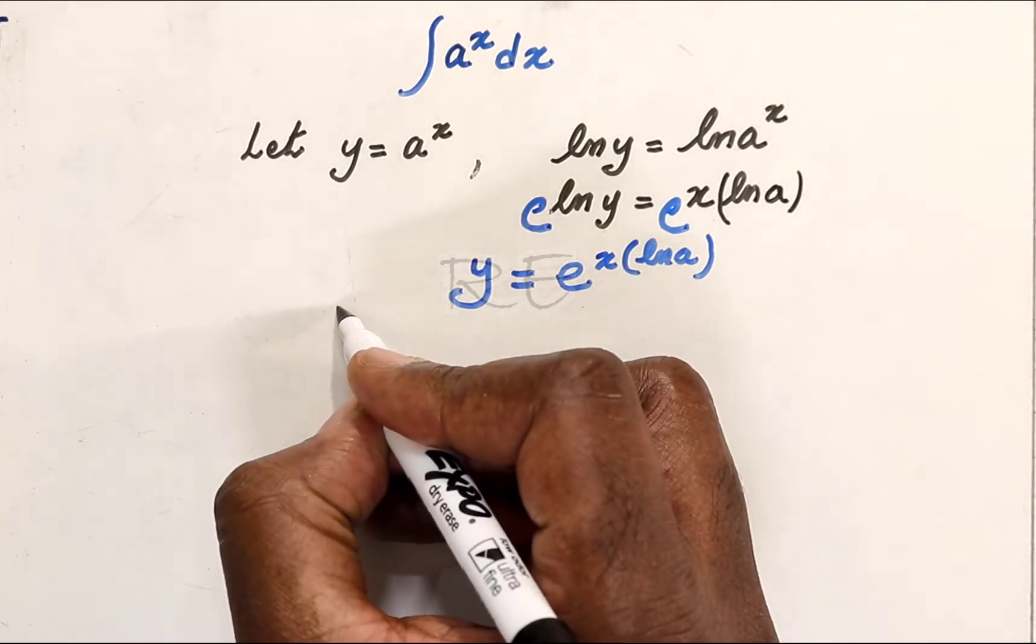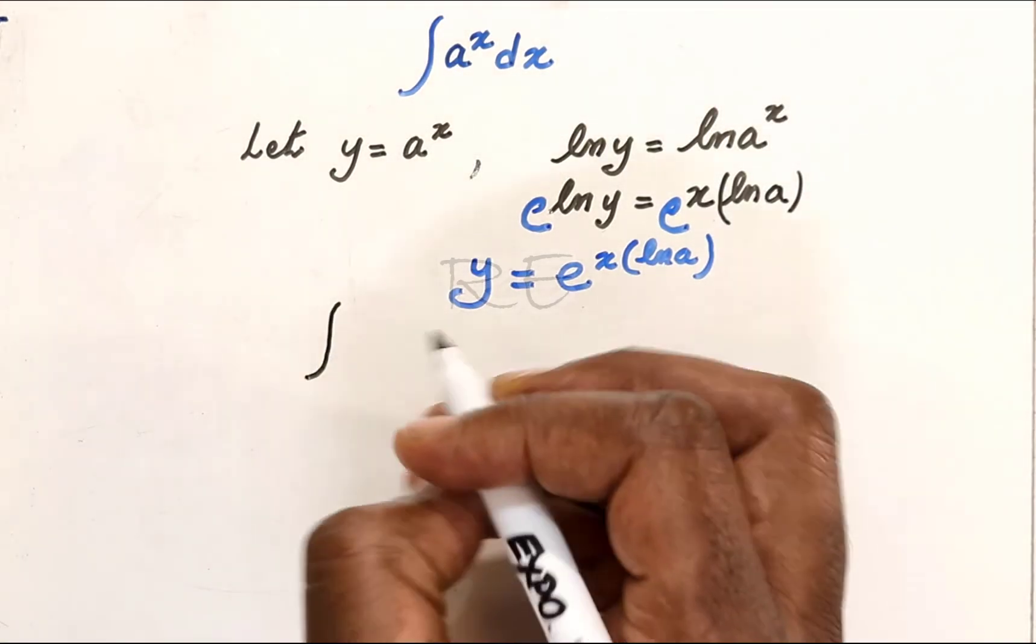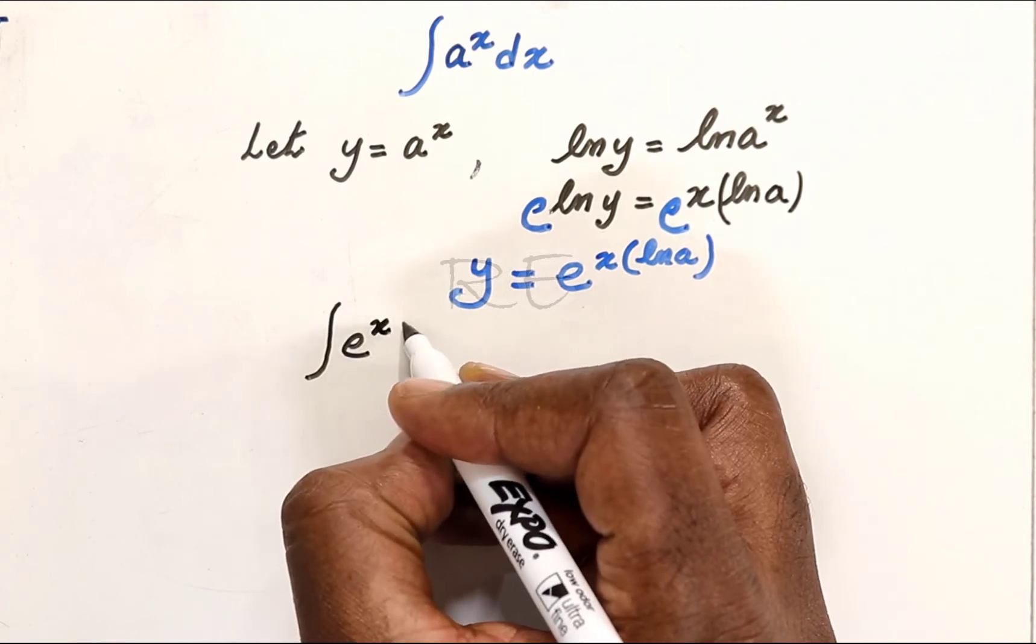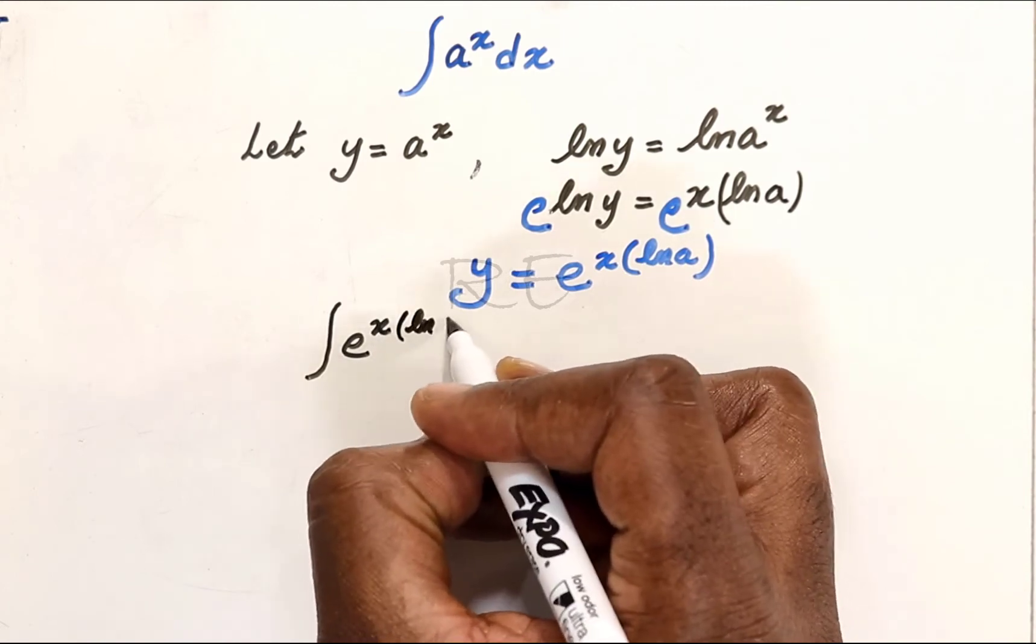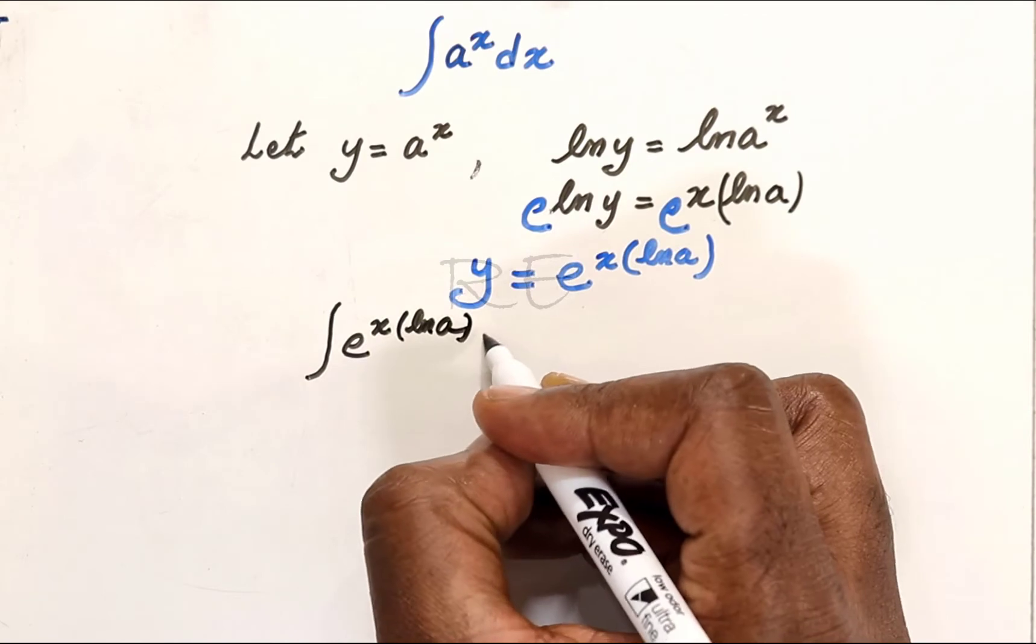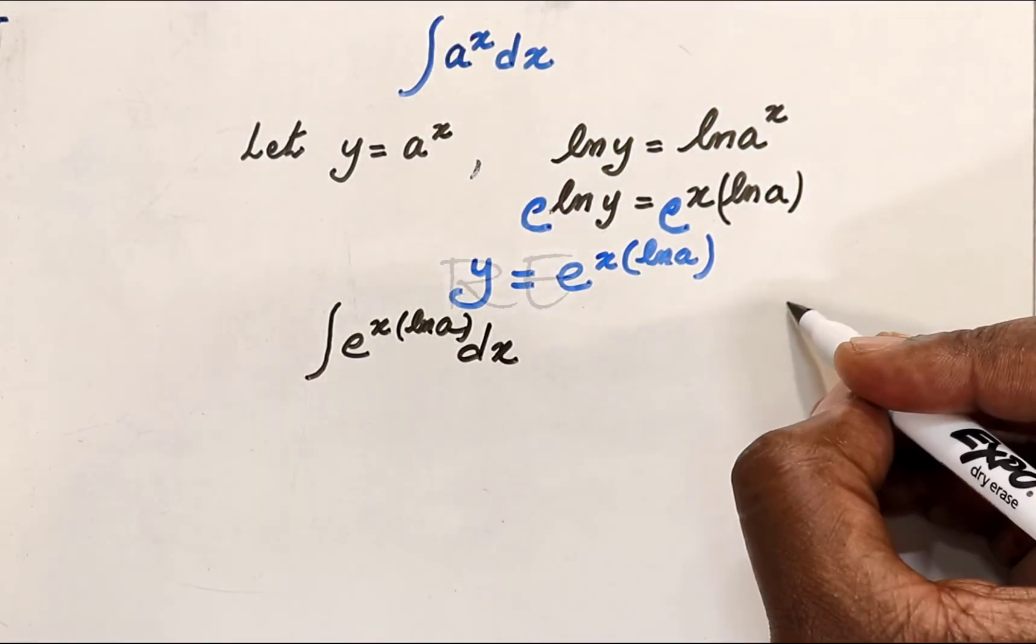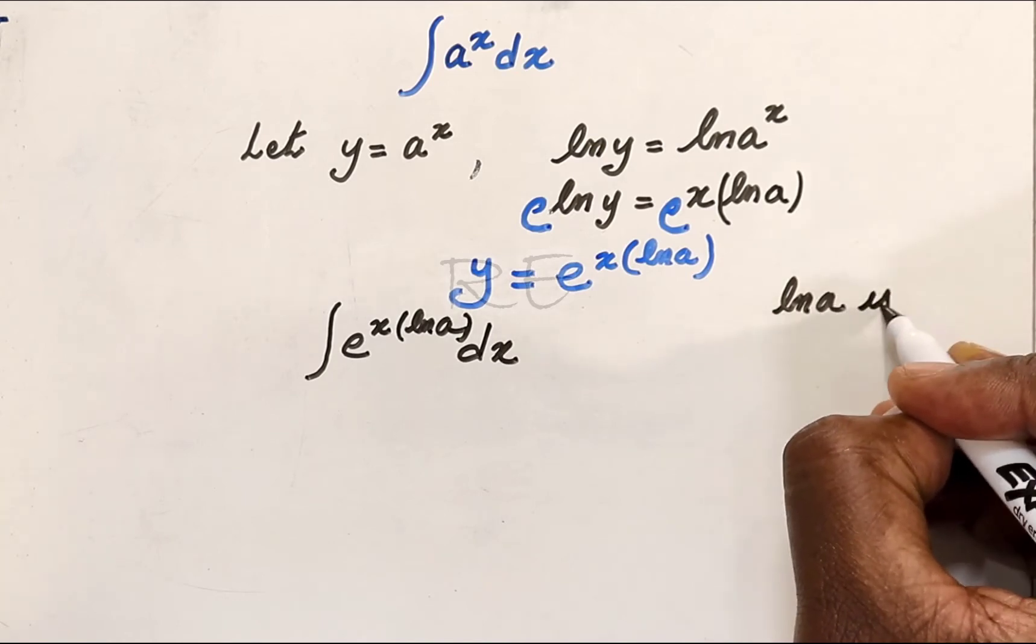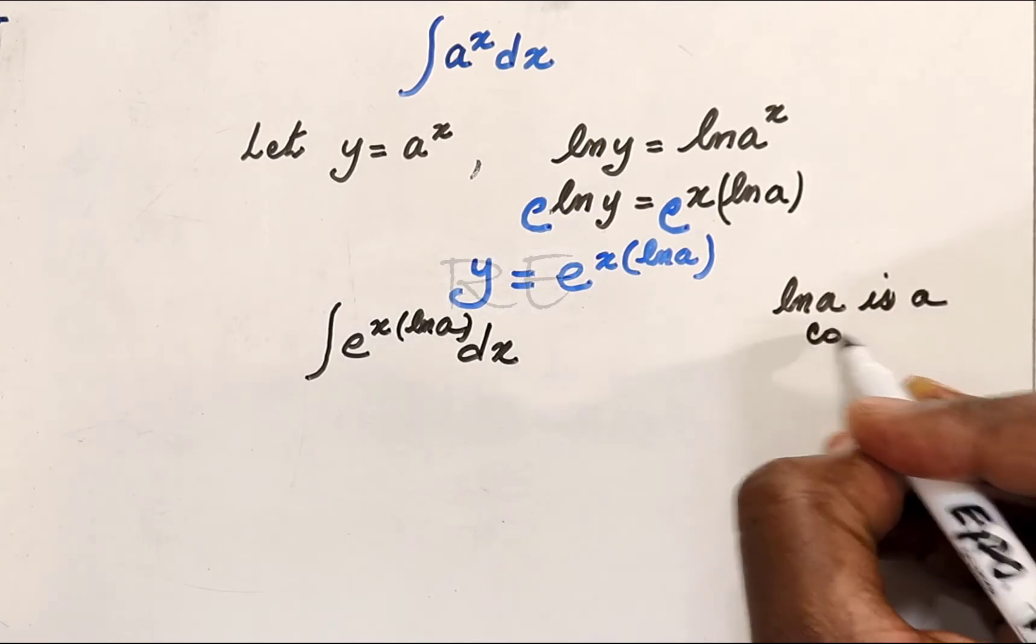And we are going to replace a to the x by e to the x ln a. So we need to integrate e to the x times ln a dx. Remember that ln a is a number, a constant.